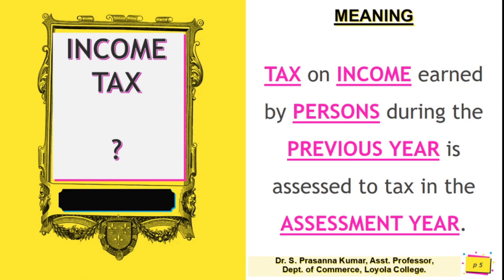Now let's discuss the second keyword: income. From a layman's point of view, income is money earned — you go to work and your employer pays you. The Income Tax Act came into effect on 1st April 1962. Each year, the Finance Minister prepares a list of rules for taxpayers, presents them to Parliament, and upon acceptance, the Act gets updated.